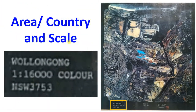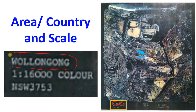Next, area and country. Every photograph gives information about the area, country, or state where the photographs were captured. For example, these photographs are captured from Olong Kong, and the area is in NSW — New South Wales.